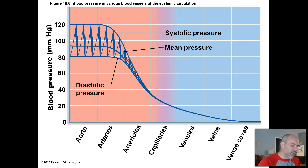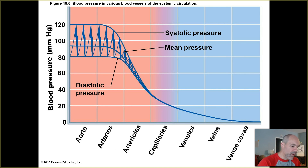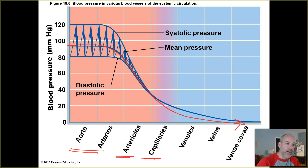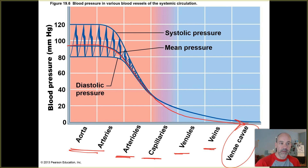Let's take another look at this diagram. Notice how your mean blood pressure gradually falls across the different types of blood vessels. It's highest in the arteries, gradually drops as you enter the arterioles, continues to drop through the capillaries, drops even lower in the venules and veins, and then gets pretty close to zero when you're in your vena cavae — the inferior or superior vena cava. That gradient is necessary in order to ensure proper blood flow.